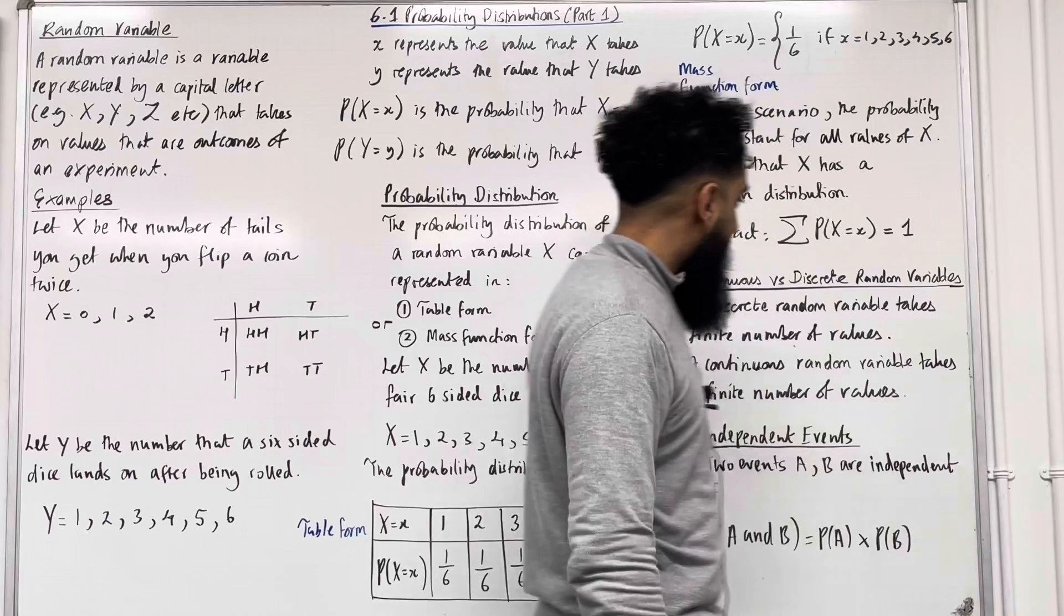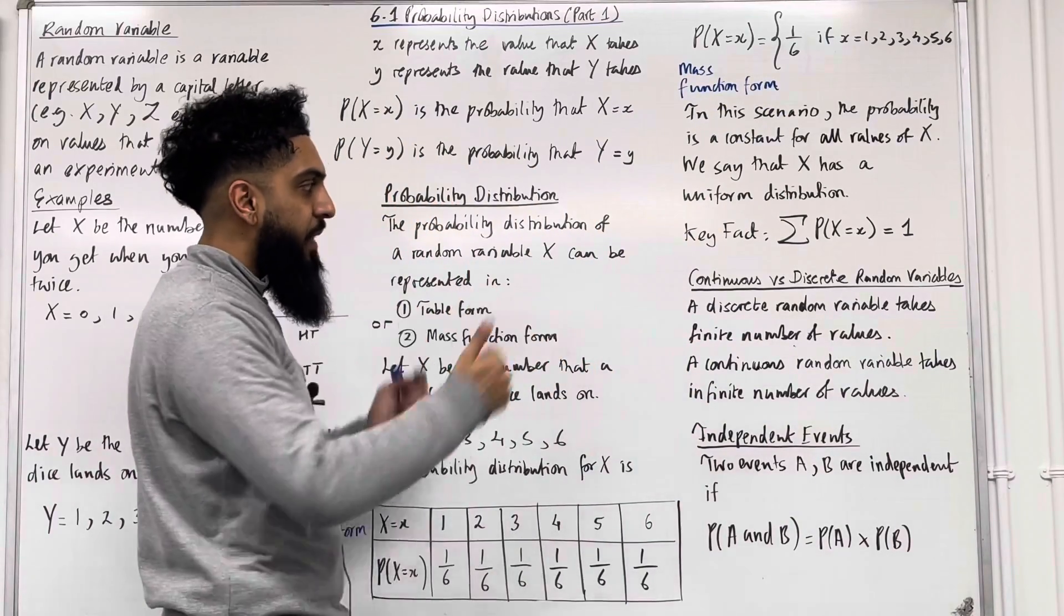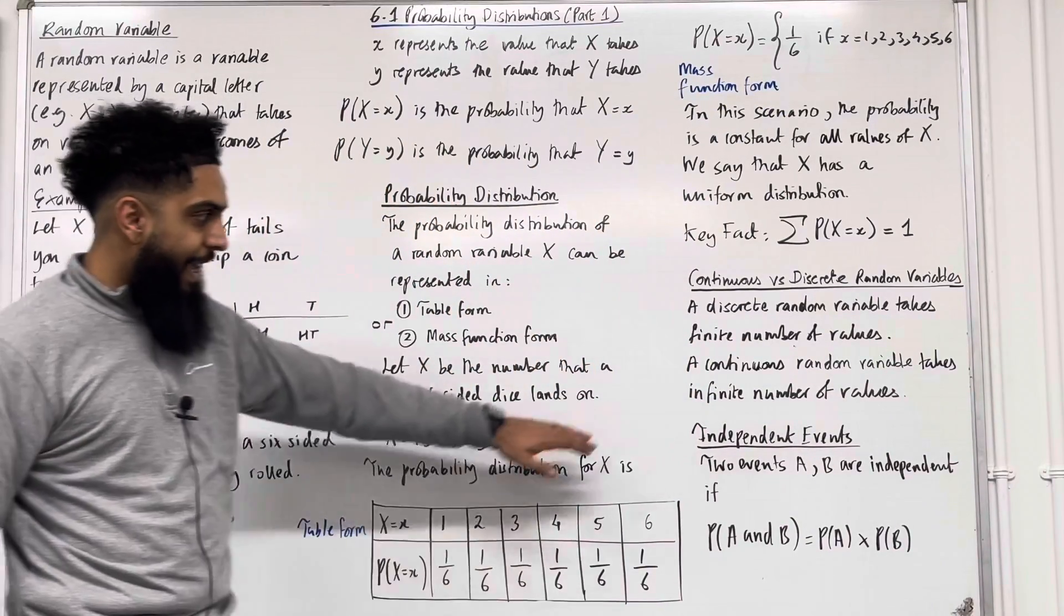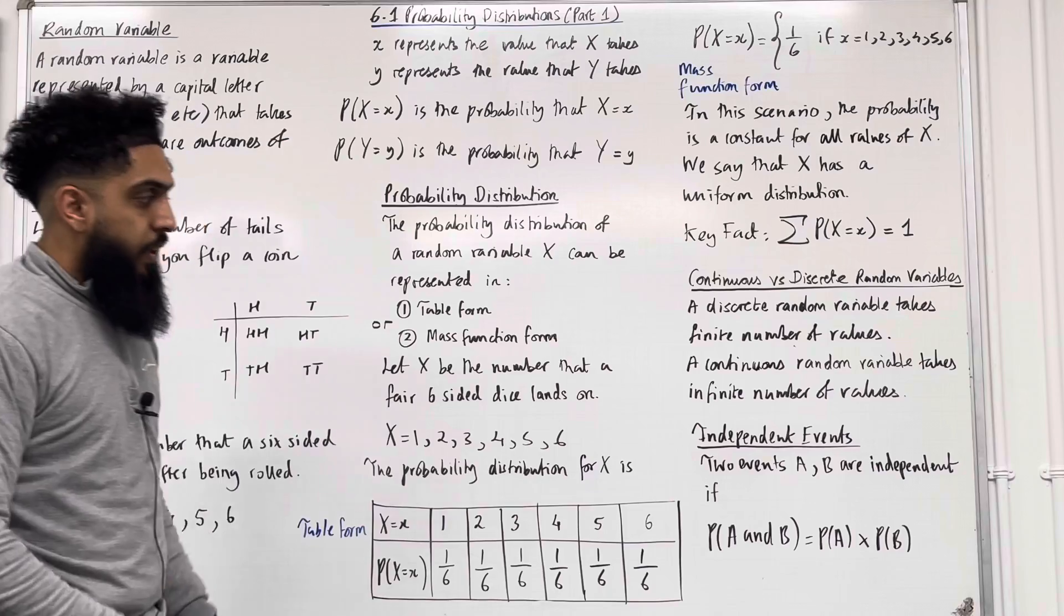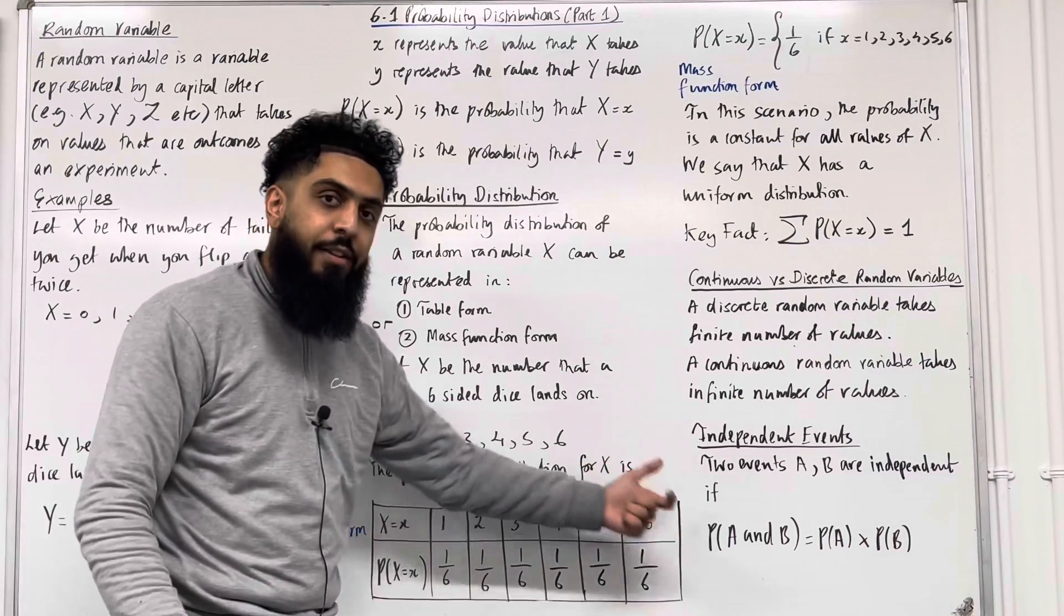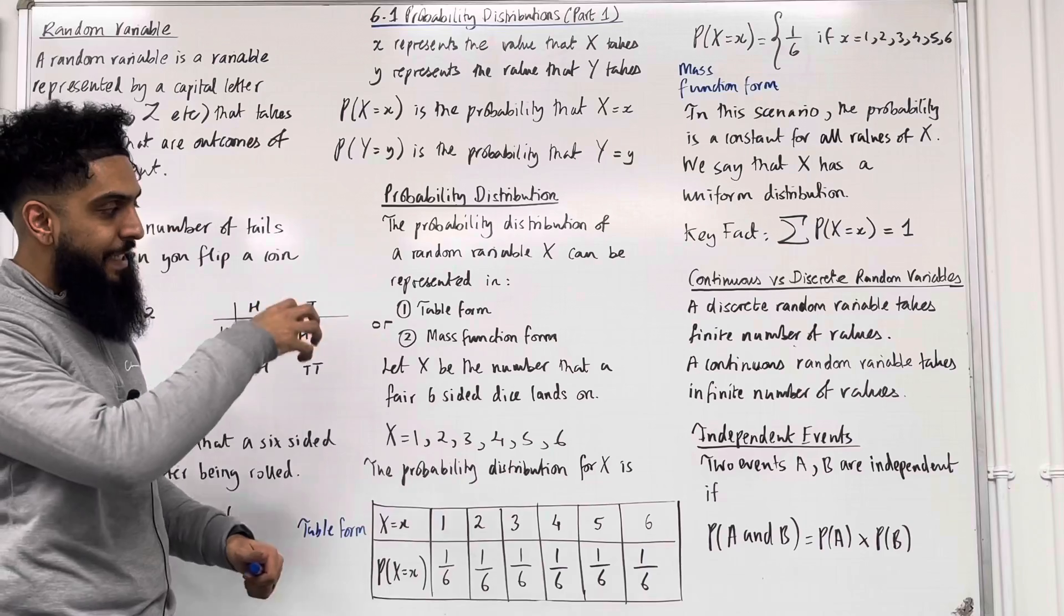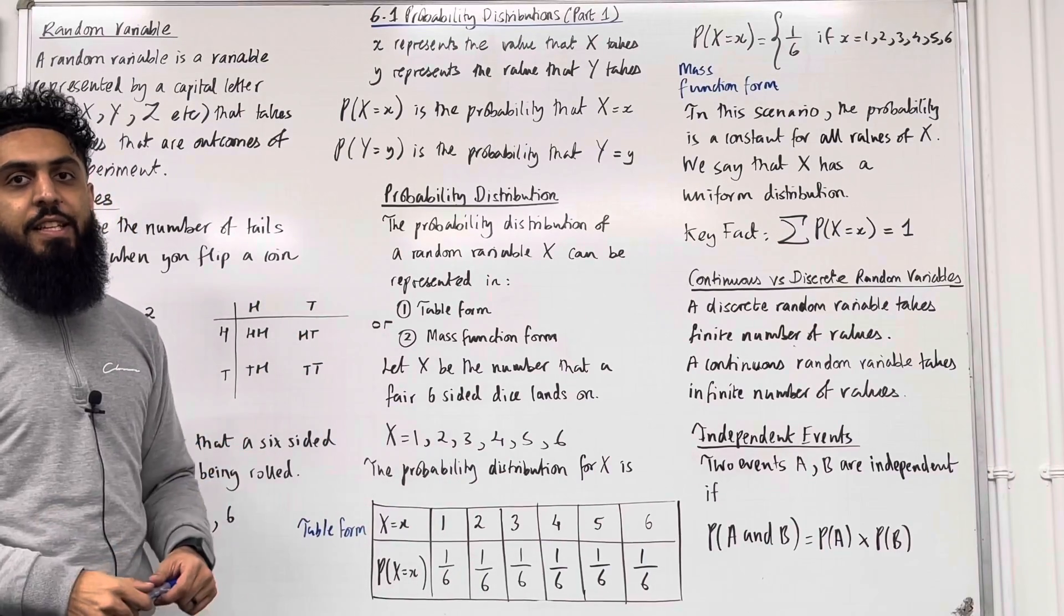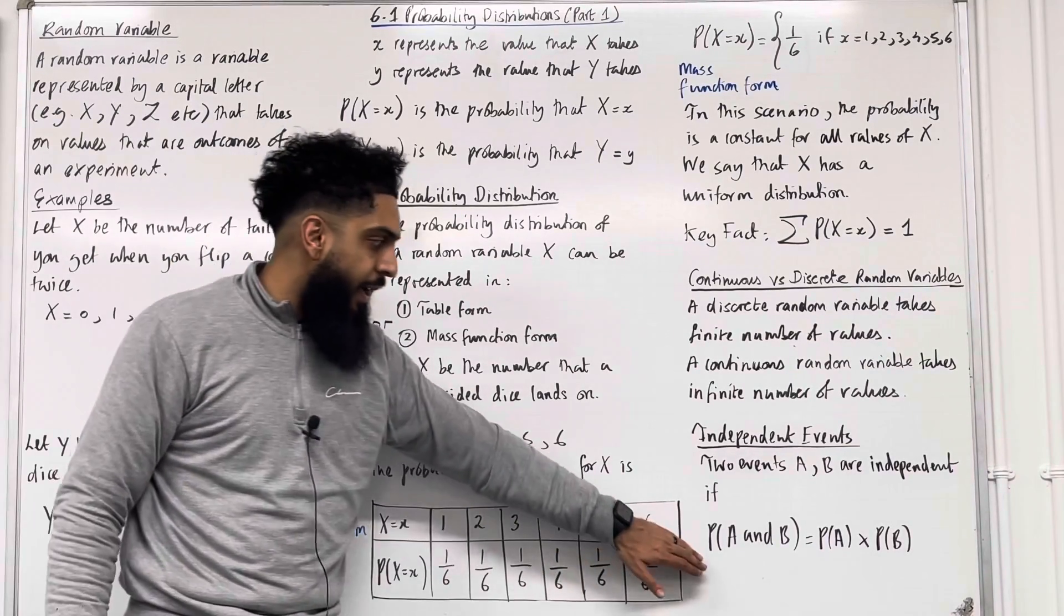Right, so that covers continuous versus discrete random variables. Independent events: two events A and B are independent if P(A and B) is equal to P(A) multiplied by P(B). Okay, so that is the definition of two events being independent.